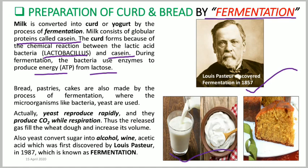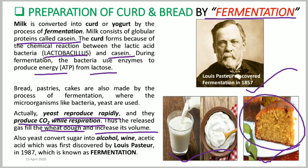Here we have a picture of conversion of milk into curd, and another picture of conversion of wheat dough into cake. For the preparation of cakes or pastries, we use yeast. Yeast are fungi that reproduce very rapidly and produce carbon dioxide during respiration. That gas causes the wheat dough to rise and increase in volume — that is how cake is prepared. Louis Pasteur also found that yeast converts sugar into alcohol or wine, and that particular process is known as fermentation.